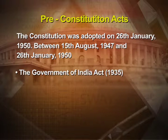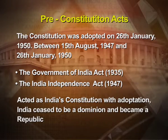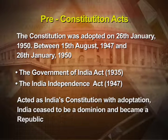India was not lawless between 15th August 1947 and 26th January 1950. Two acts served as the constitution of India during that period: the Government of India Act of 1935 and the India Independence Act of 1947. Note it is the India Independence Act, not the Indian Independence Act.